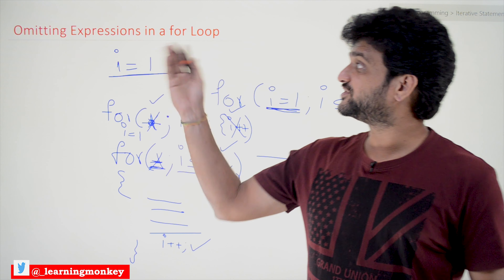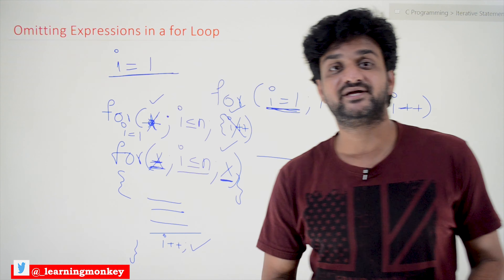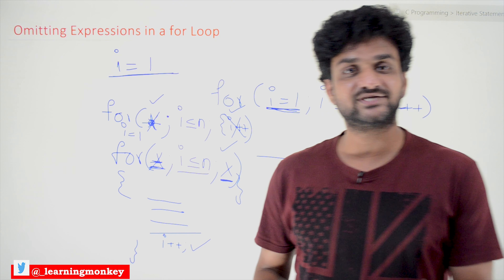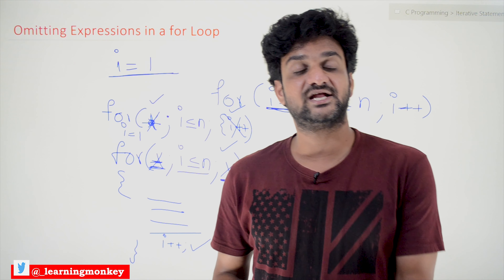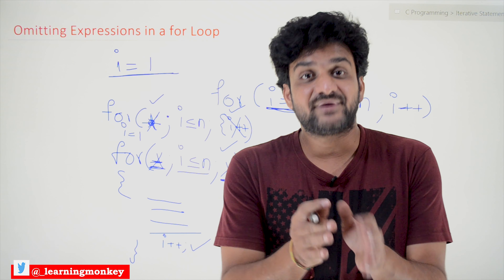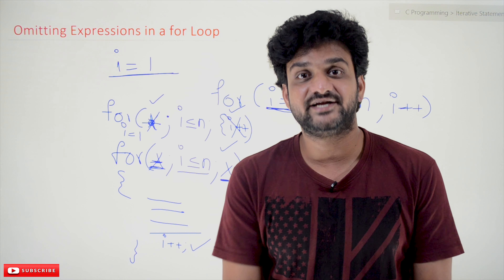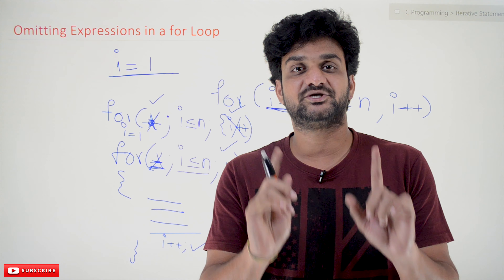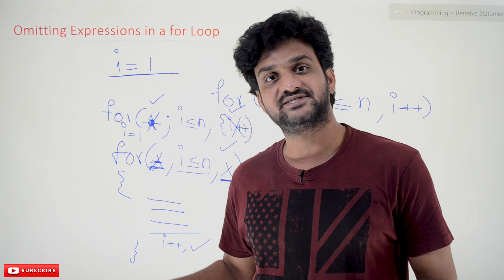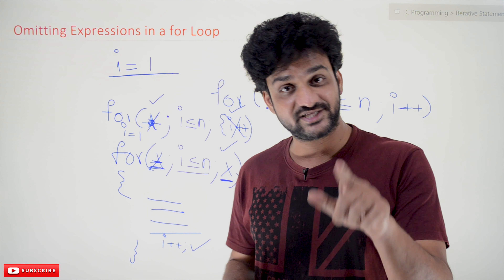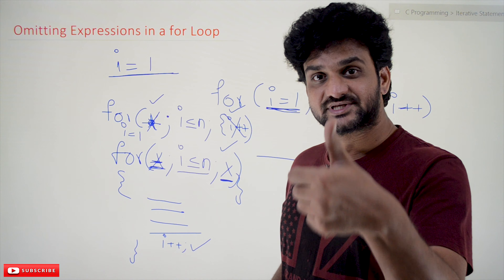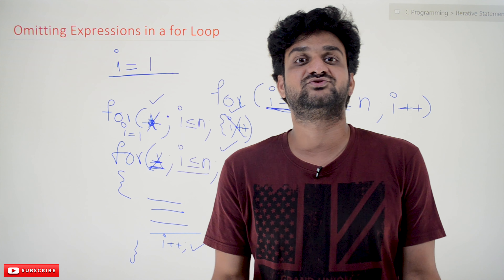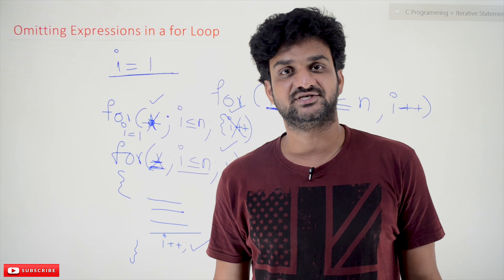So this is how the omitting of expressions can be done in a for loop. Hope you got the clarity on this concept. Thanks for watching. If you haven't subscribed to our channel, please subscribe and press the bell icon for the latest updates. If you have any doubts regarding this concept, please post your doubt in the comment section below. If you feel this video is helpful, please give us a like and share this video with your friends so that they will also get benefited.